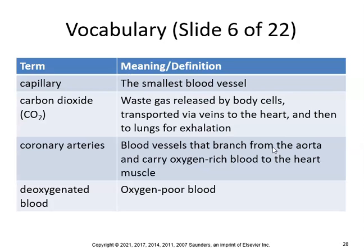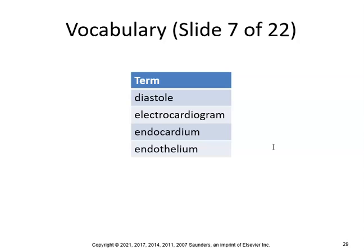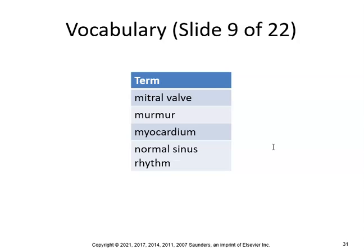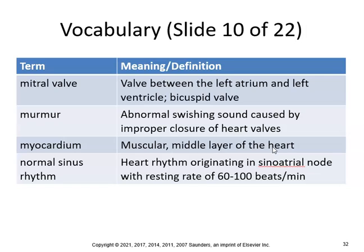The atrium is one of the two upper chambers of the heart. A capillary is the smallest blood vessel. Carbon dioxide is the waste gas released by body cells, transported by veins to the heart and then to the lungs for exhalation. Coronary arteries branch from the aorta and carry oxygen-rich blood to the heart muscle. Deoxygenated blood is oxygen-poor blood. Diastole is the relaxation phase of the heartbeat. An electrocardiogram records the electricity flowing through the heart. The endocardium is the inner lining of the heart — inflammation of it is endocarditis. The endothelium is the innermost lining of blood vessels.